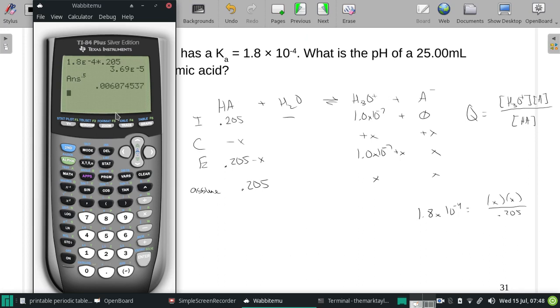We have an X of 0.00607, which is way small compared to that 0.205 and very large compared to the 1 times 10 to the negative seventh, so our assumption is safe.